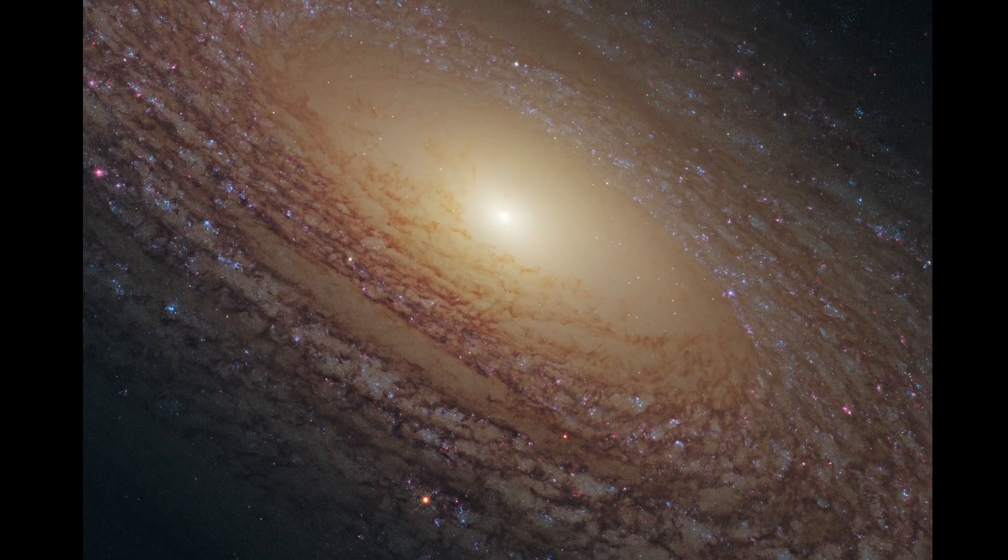The word flocculent in this case just means fluffy. So essentially they have spiral arms that are somewhat discontinuous and somewhat broken up in places. With the galaxy known as NGC 2841 being the most commonly used example.